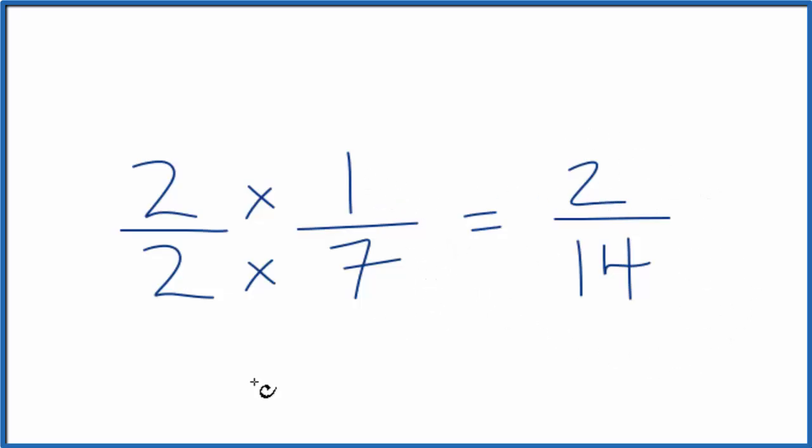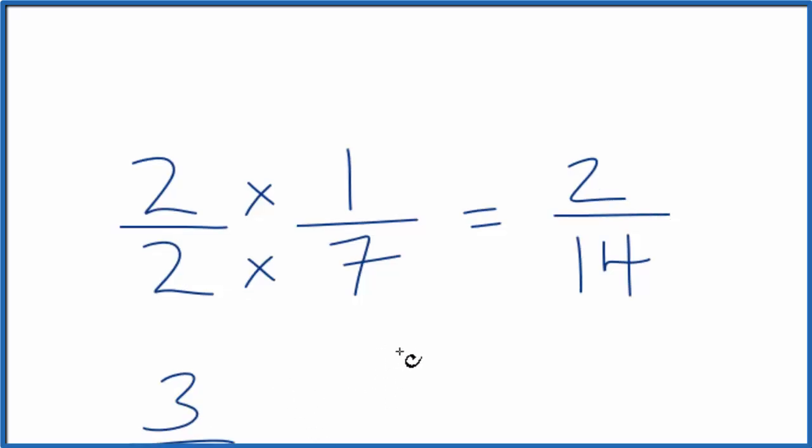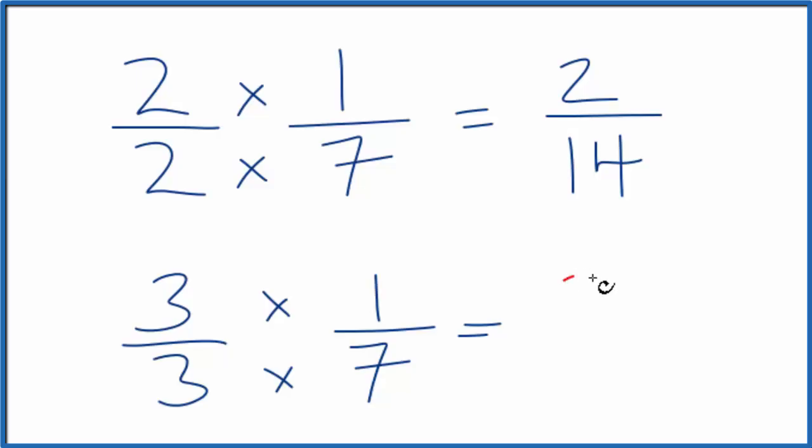You could also multiply 1/7 by 3 over 3, and that would give you an equivalent fraction as well. 3 times 1 is 3, 3 times 7 is 21, and that's equal to 2/14 and 1/7.